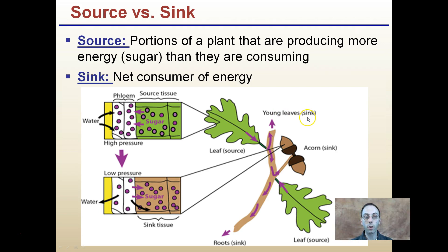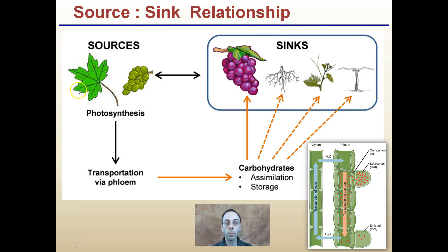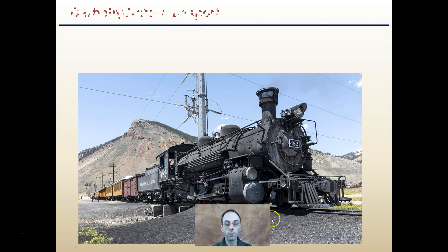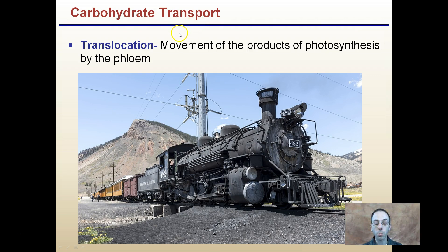Sources are typically green areas going through the process of converting light energy to sugars. This is then transported via the phloem. These carbohydrates are assimilated into storage and can go to roots, shoots, and fruits. Remember, entering the phloem, carbohydrates can go up and down, being transported to where they're needed. This transportation process — carbohydrate transport — is through a process called translocation, which is the movement of products of photosynthesis by phloem.